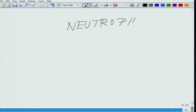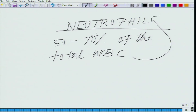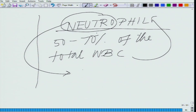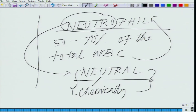Neutrophils are bigger than others and basically 50 to 70 percent of the total WBCs are neutrophils. If you break down this word — neutrophils means they are neutral, neither acidic nor basic. They are chemically neutral.